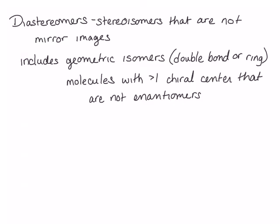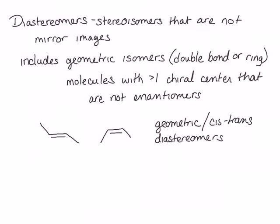Let's look at some examples. These two molecules are geometric, or cis-trans isomers. Because they are stereoisomers that are not mirror image isomers, they are also diastereomers. These two molecules are also geometric, or cis-trans isomers, and because they are non-mirror image stereoisomers, they are also diastereomers.